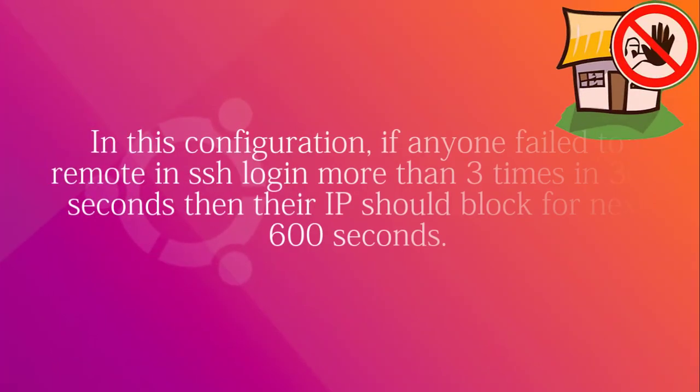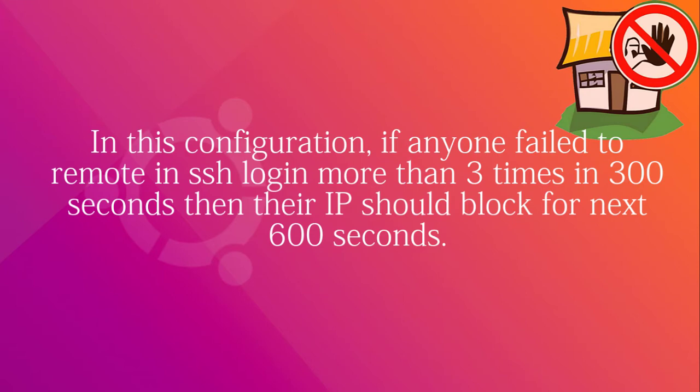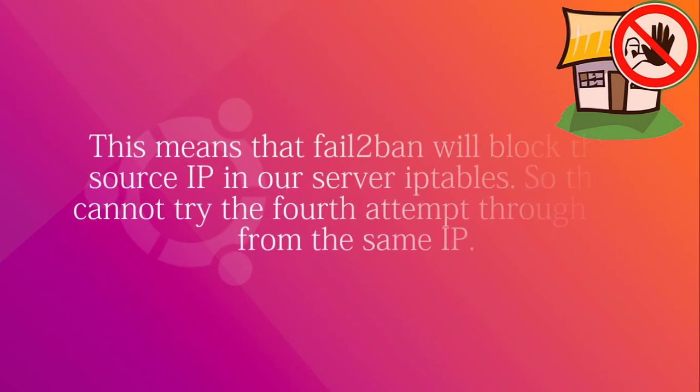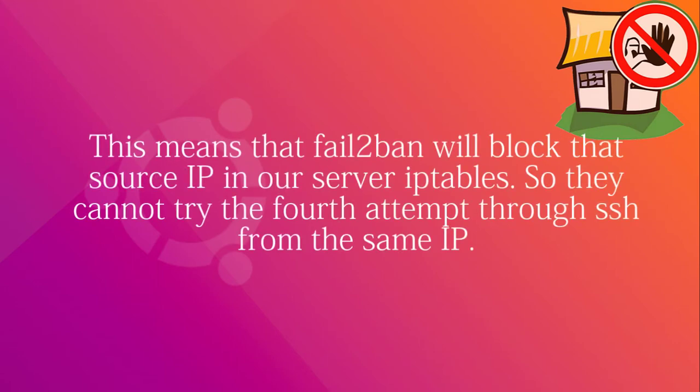In this configuration, if anyone fails to login via SSH more than 3 times in 300 seconds, their IP will be blocked for the next 600 seconds. This means that fail2ban will block that source IP in our server's IP tables, so they cannot try a 4th attempt through SSH from the same IP.